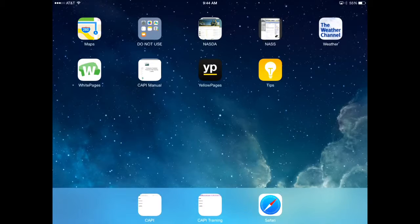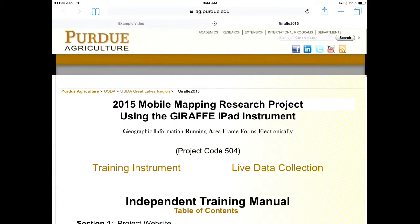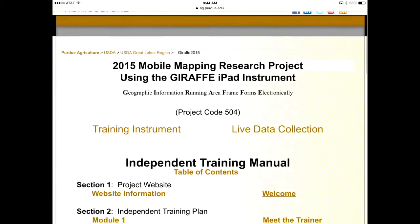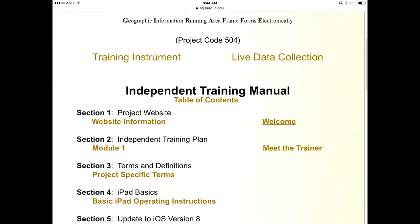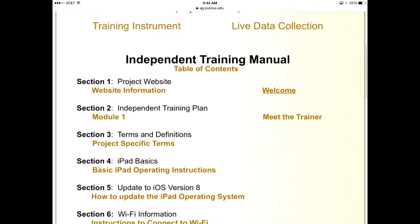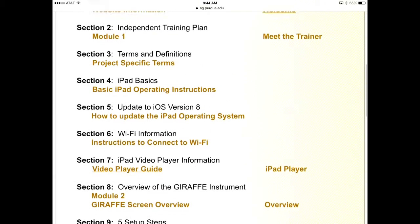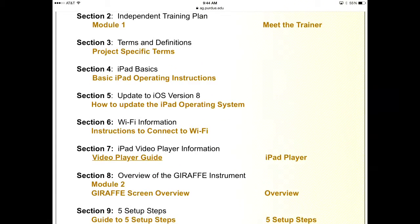Locate the Purdue University Project website as shown in Section 1 of your manual. Scroll down to the section on the website that contains the desired video. All videos are located in gold text on the right hand side. Tap on the name of the video.